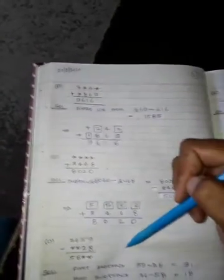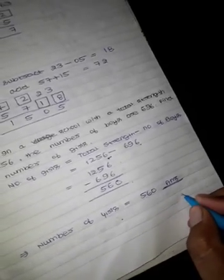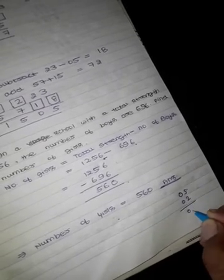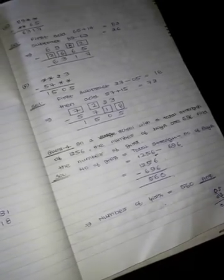Missing number. Question number 4: In a school with a total strength of 1256, how many boys? 696. So we have to minus girls. We can understand this. Five members, two boys. So how many girls? We can do this.